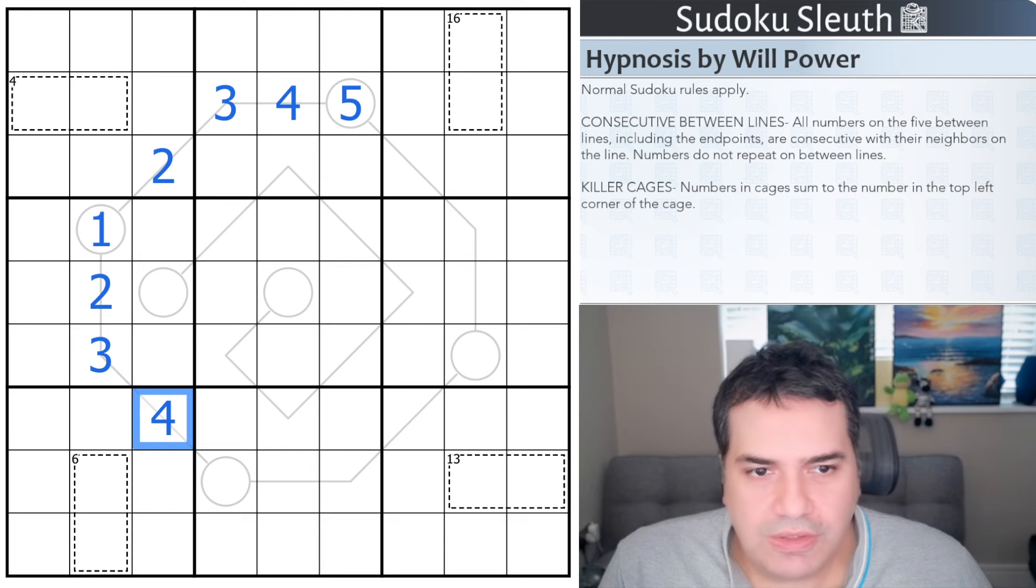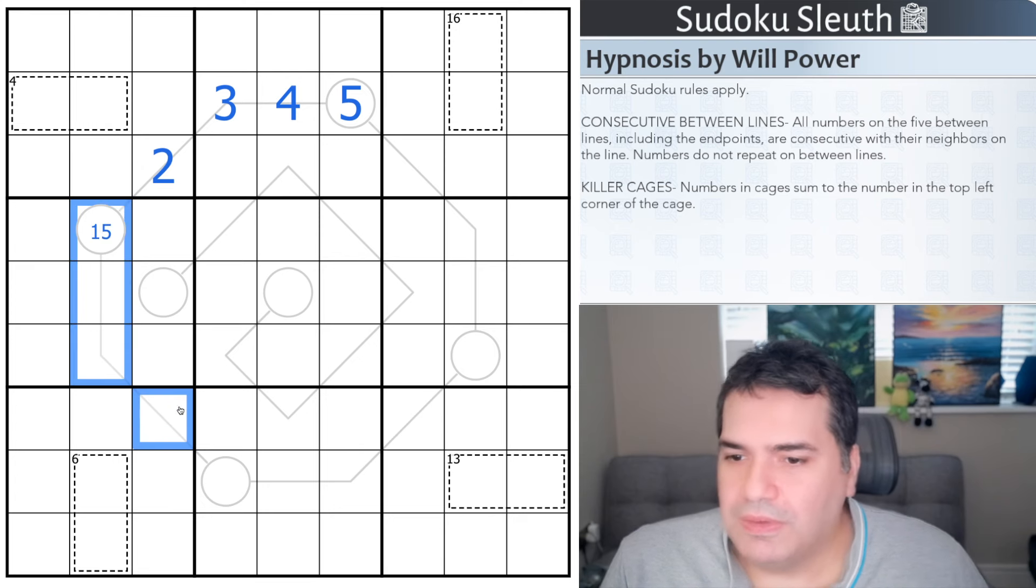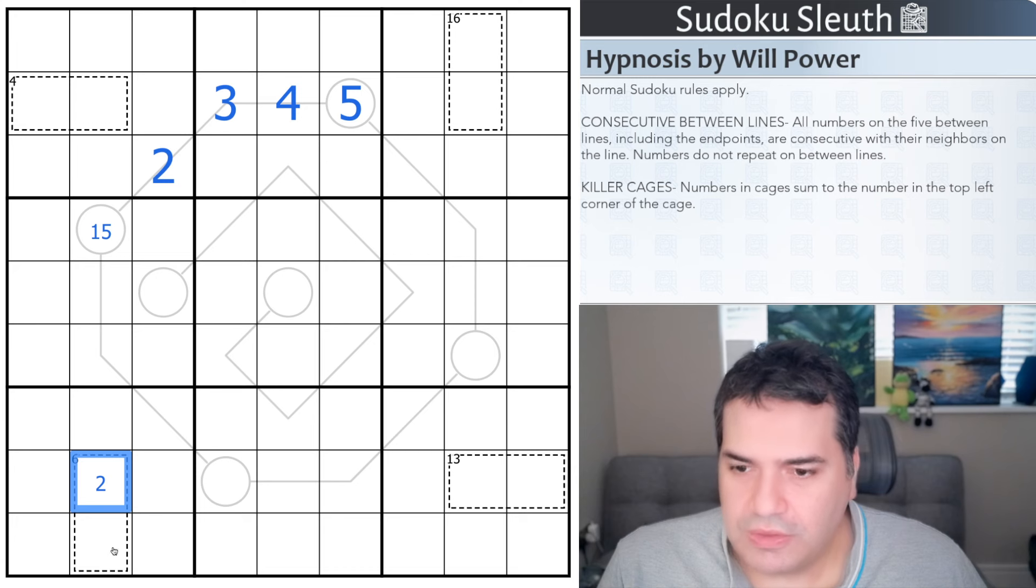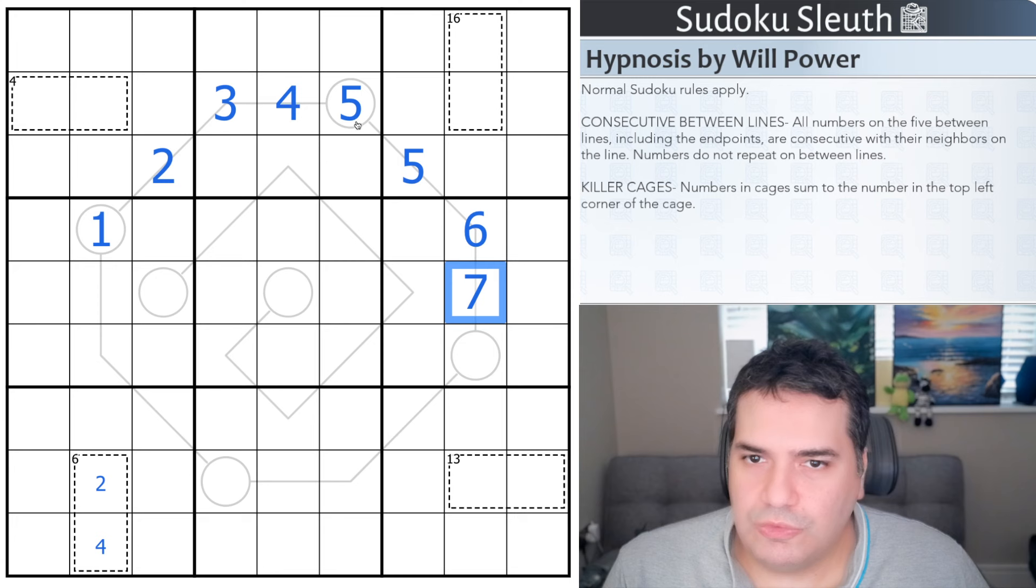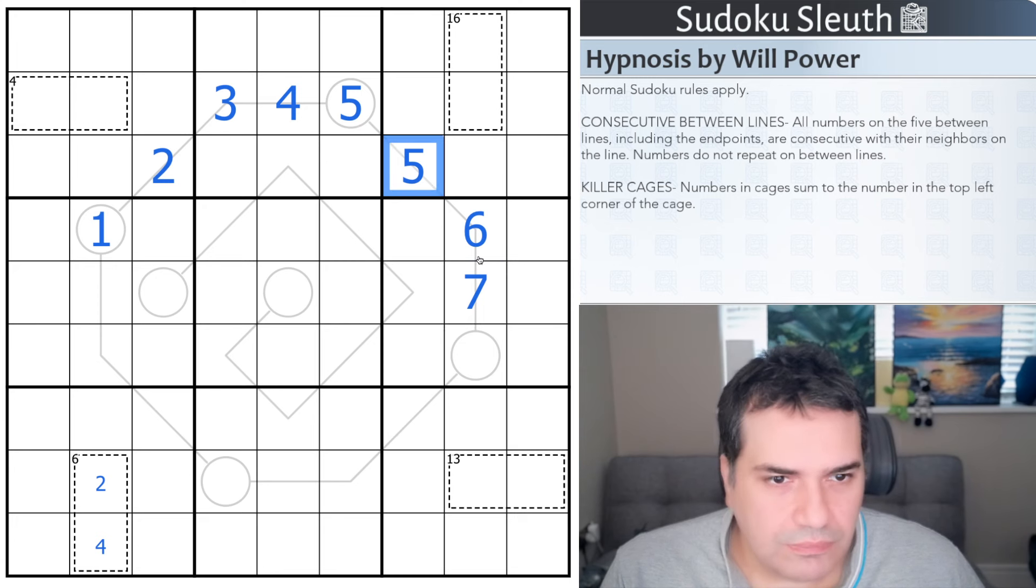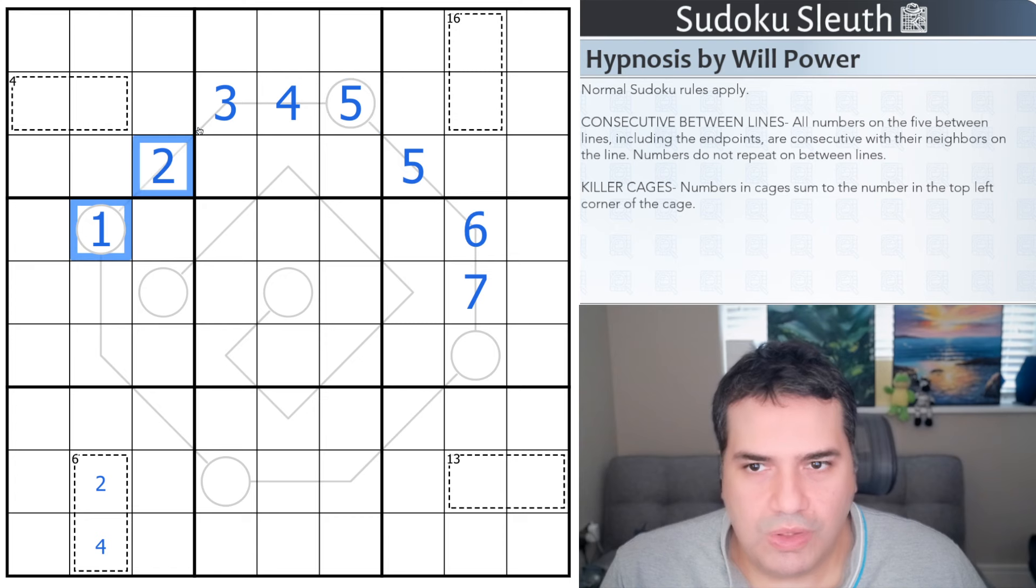Clearly wherever we have the one here, it's going to continue. What else do we have? Killer cages. Numbers in cages sum to the number in the top left corner. For example, if it's a two there, this would have to be four because these two cells have to add up to six. Will said numbers do not repeat, and I think the fact that they have to be consecutive feels fairly obvious. It doesn't have to go one through nine.